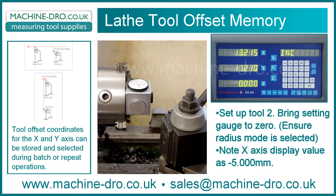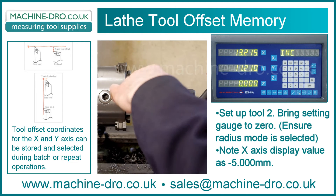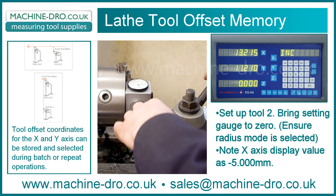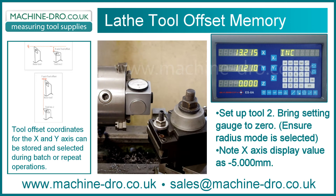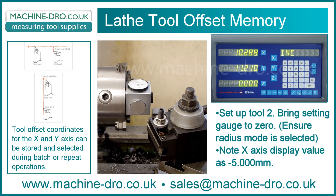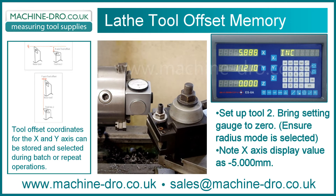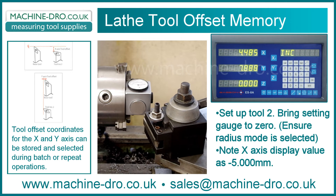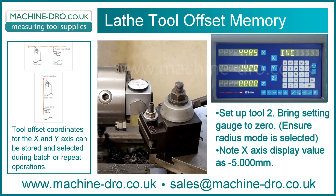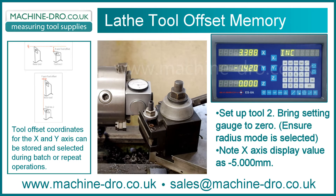Setup tool 2, bring the setting gauge to zero. Ensure radius mode is selected. Note the X axis display value as minus 5.000mm.